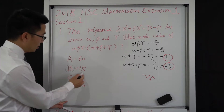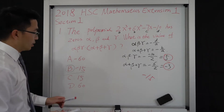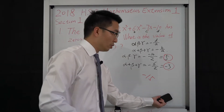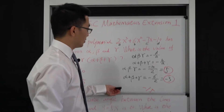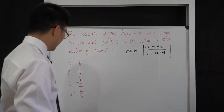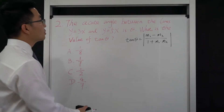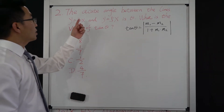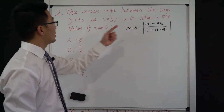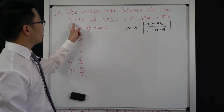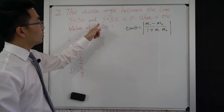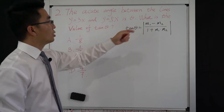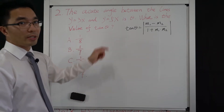So the answer is B, which is negative 15. Okay, let's go to question 2. The question asks for the acute angle between two lines: the first one is y = 3x, and the other one is y = 5x, giving angle theta. So what is the value of tan theta?